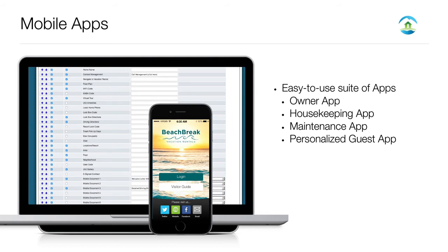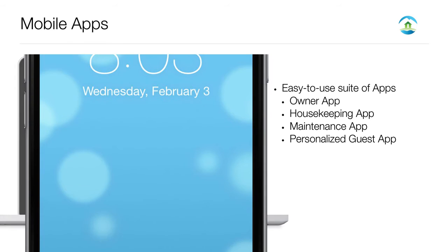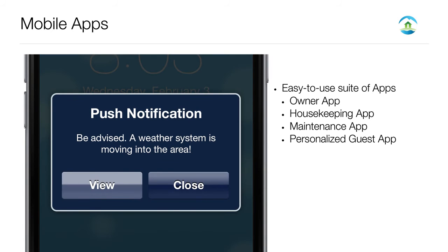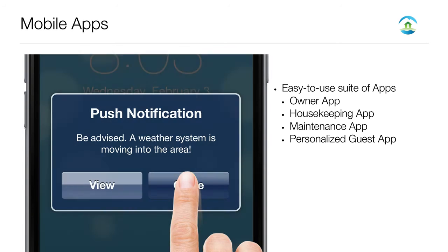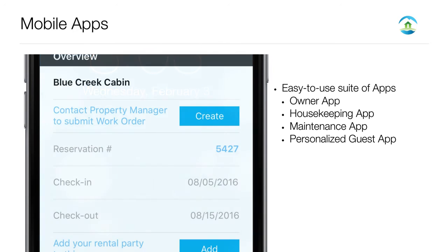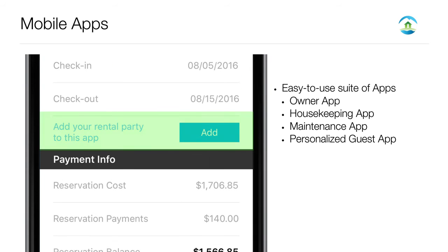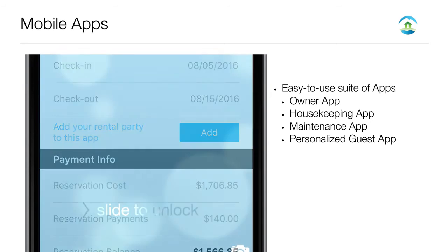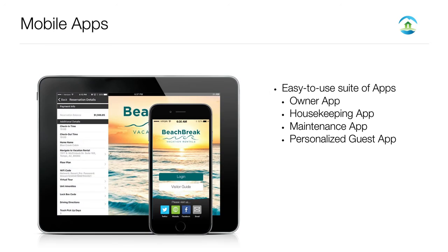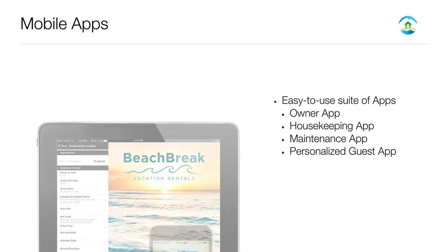You determine what information to show in the guest app — provide door lock code information, Wi-Fi codes, remote control instructions and much more. Have you ever thought of sending push notifications to your guest's smartphone, such as a weather alert or a local event while they are in town? By giving them the ability to share the guest app with other members in their party, you can harness critical marketing data for everyone in the reservation. Reduce calls to your reservation staff and focus on converting bookings.